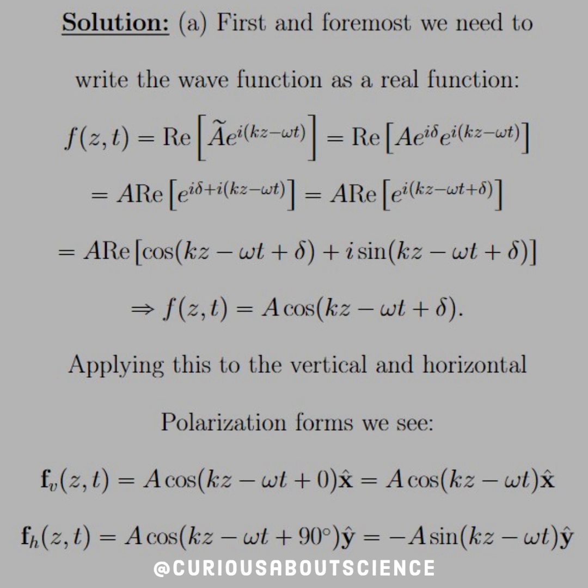First and foremost, we need to write the wave function as a real function. Hence, F of Z of T is equal to the real part of the exponentials, which we can break up that A tilde into A e to the i delta times the exponential i KZ minus omega T.